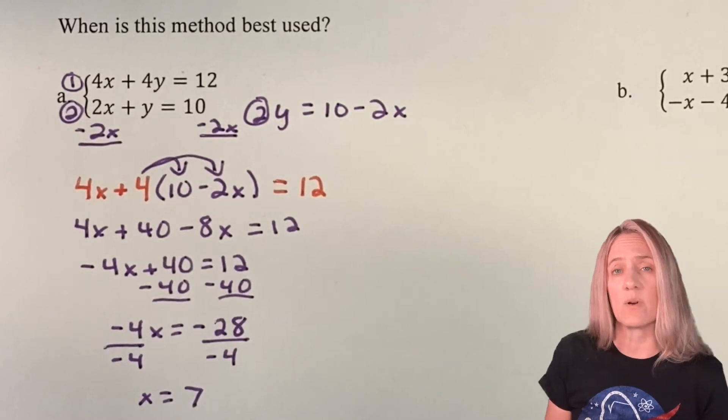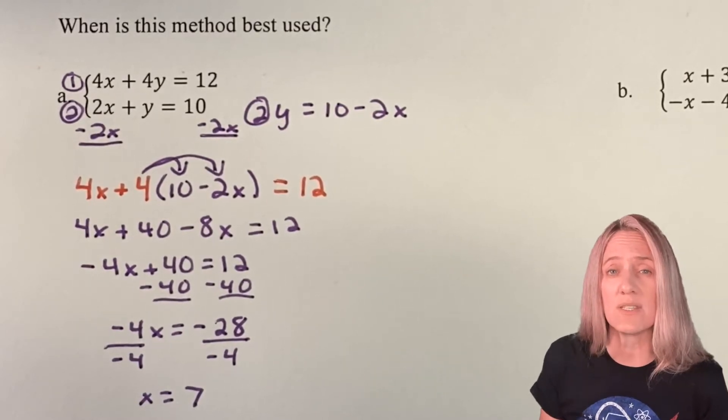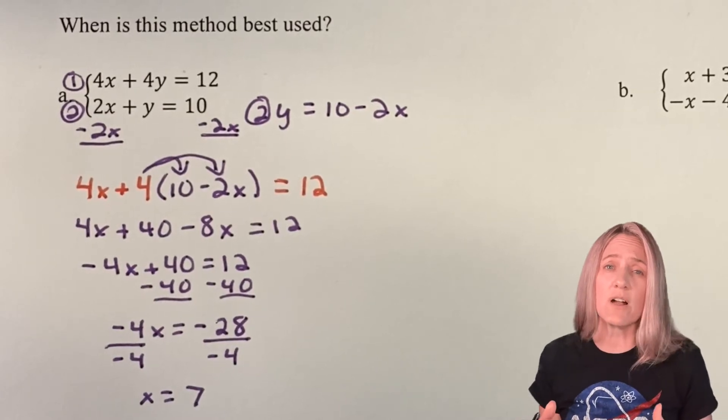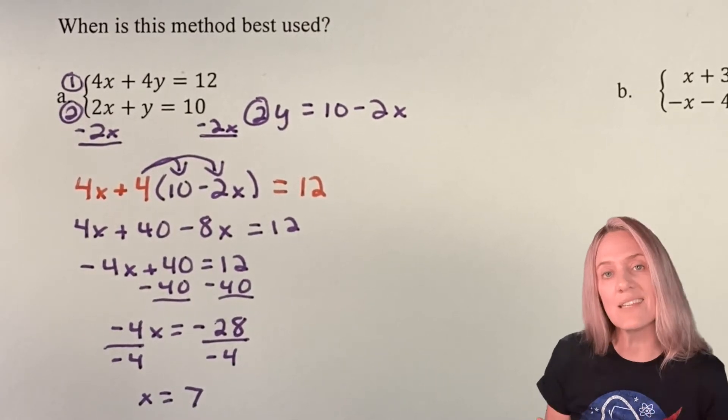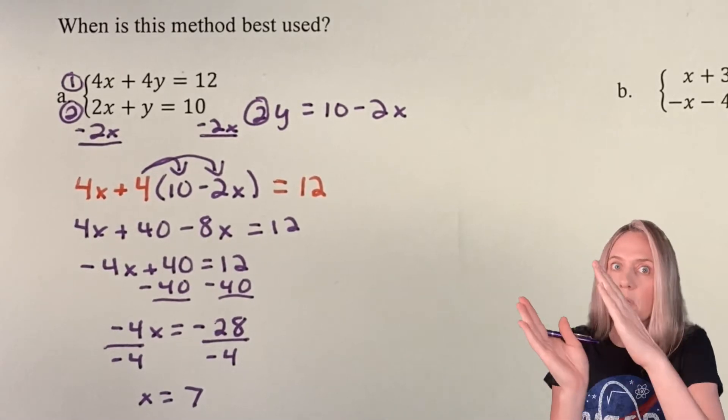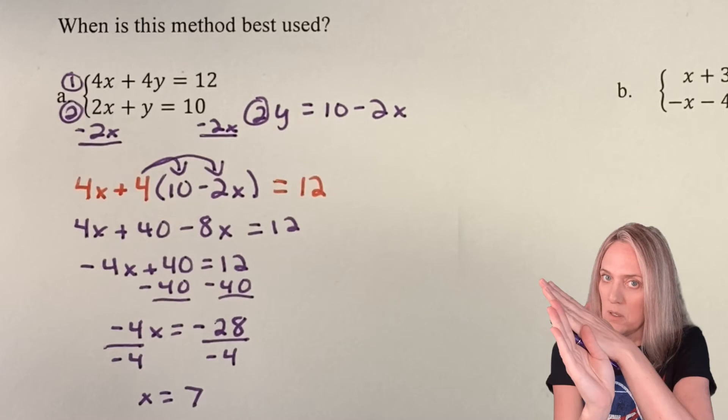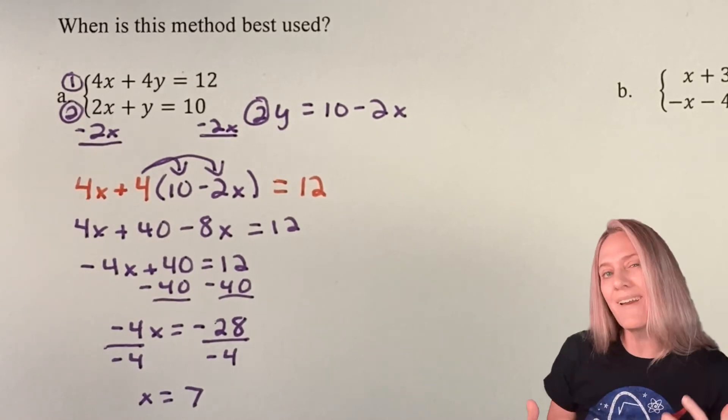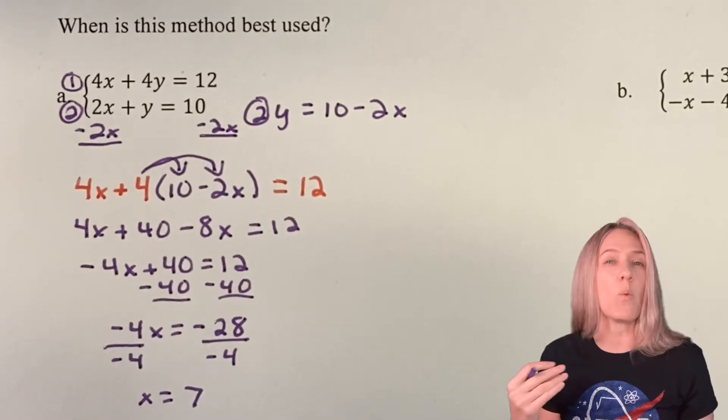We have our x-coordinate, but that's not a solution to a system. One of the big reasons for solving graphically is so that you know conceptually the solution is that point where they intersect. So we're not done.